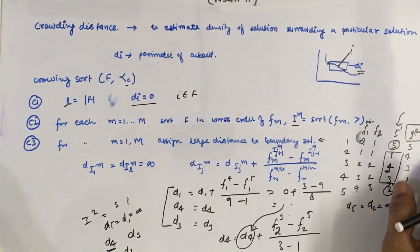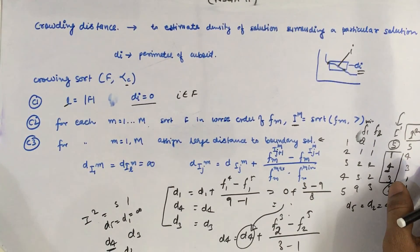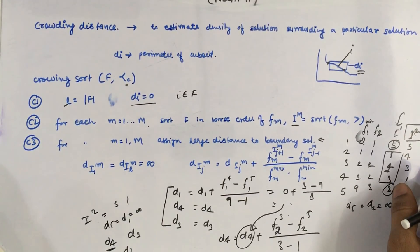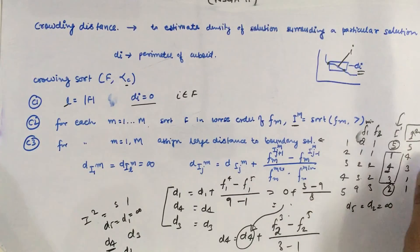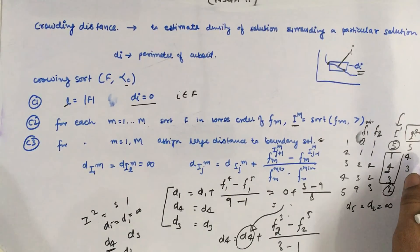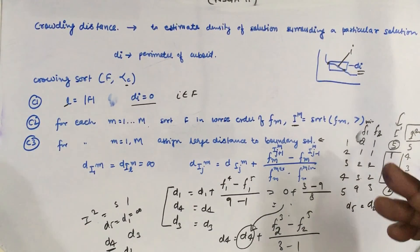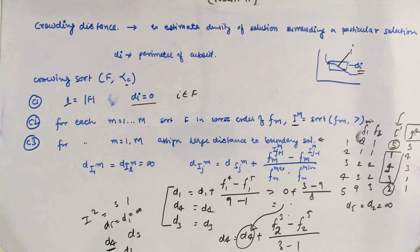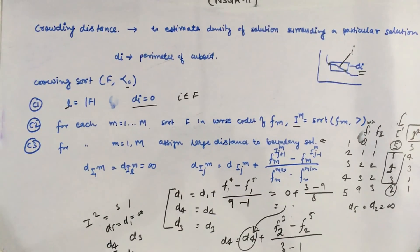This is all about the idea of crowding distance. We calculate this crowding distance to solve problems for NSGA-2 multi-objective optimization. If you have any doubts regarding the calculation of crowding distance, write them in the comment section and I will try to resolve them. Thank you very much for watching.